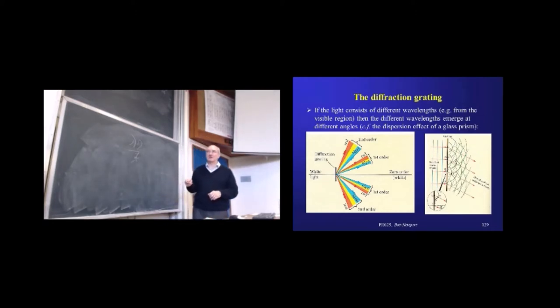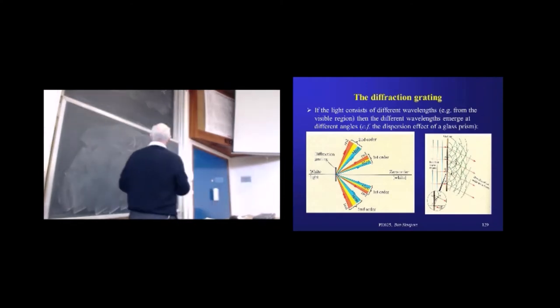So if we take any two of those slits, and we look at whatever that angle might be to give us constructive interference, it's exactly the same sort of trigonometry we use when we looked at diffraction. And you remember for diffraction, we came up with something called Bragg's law.